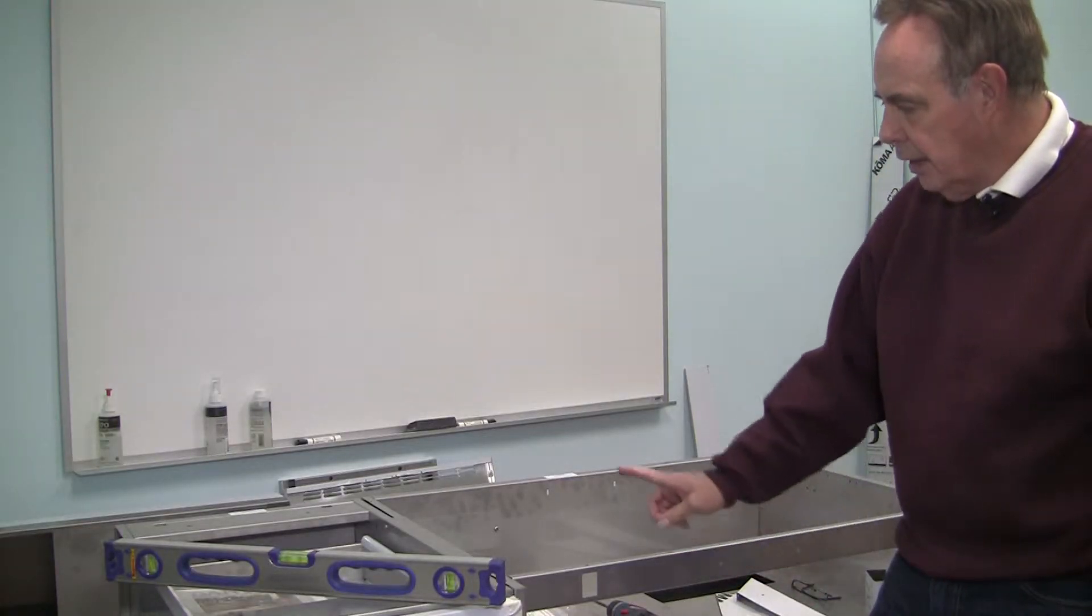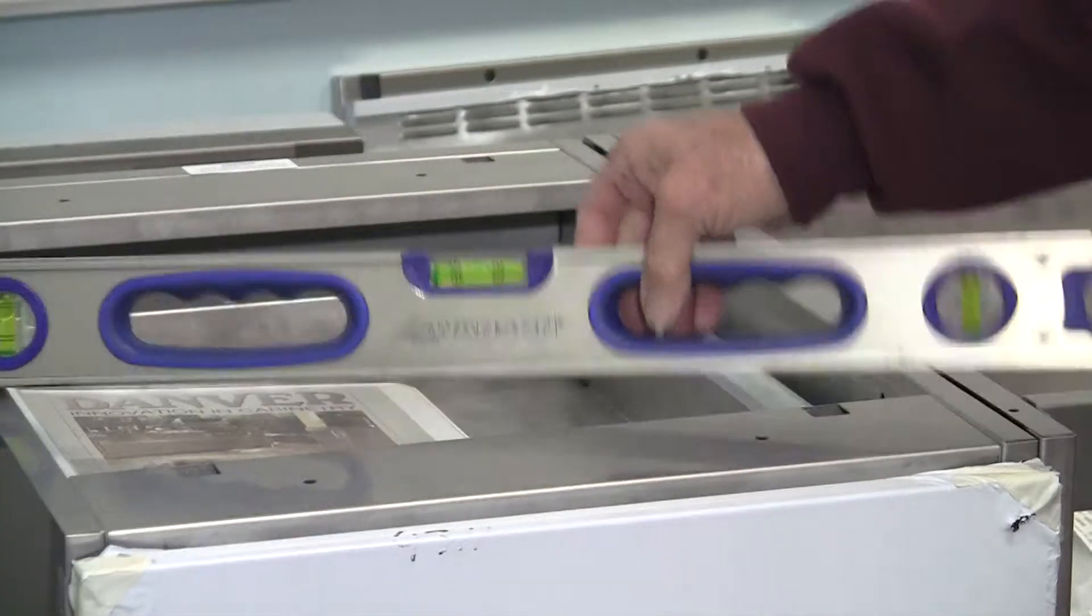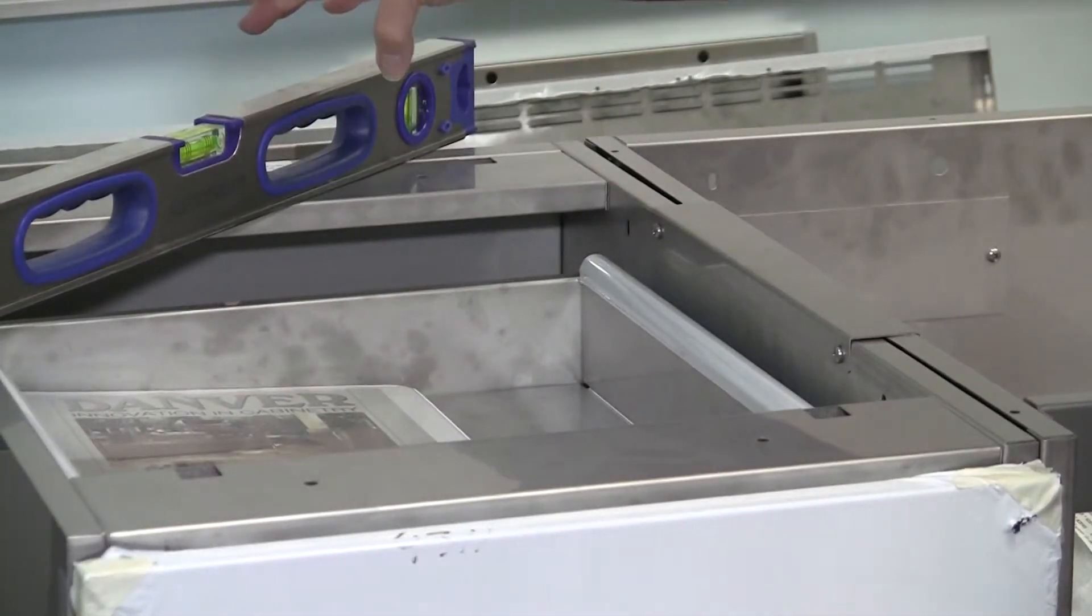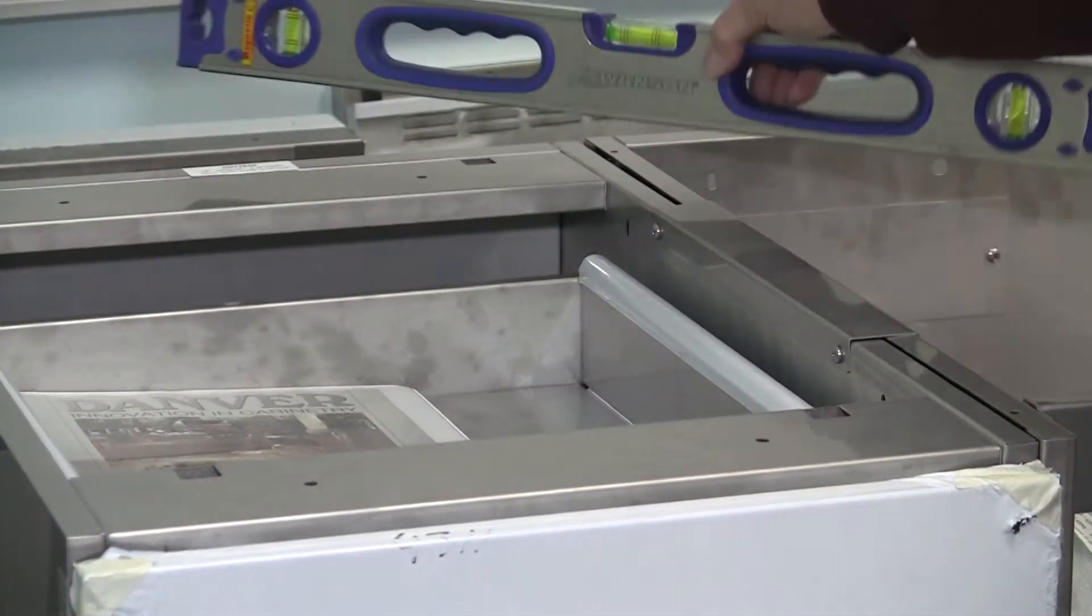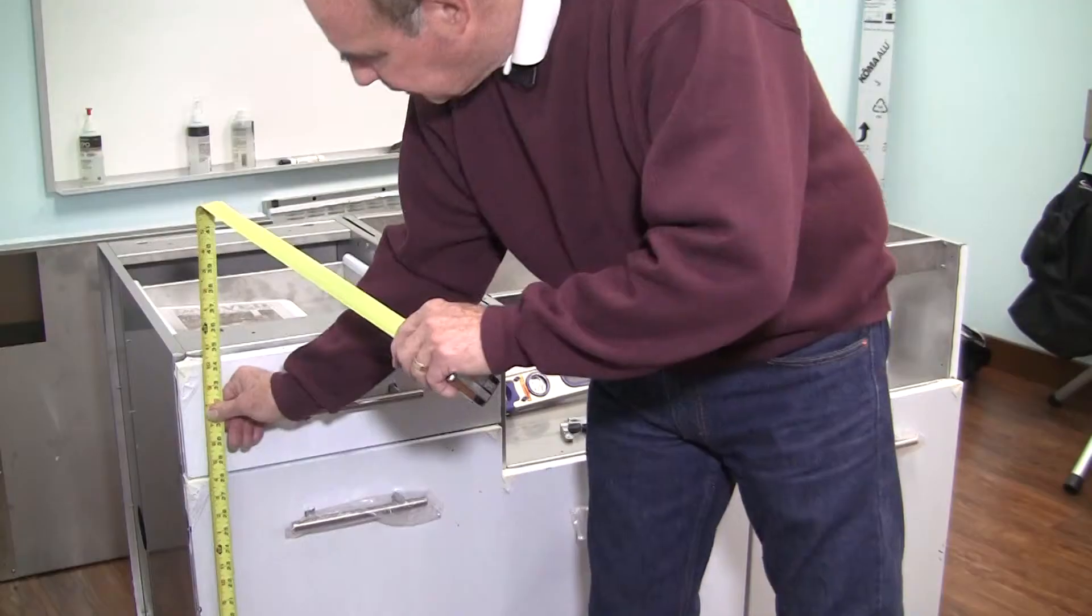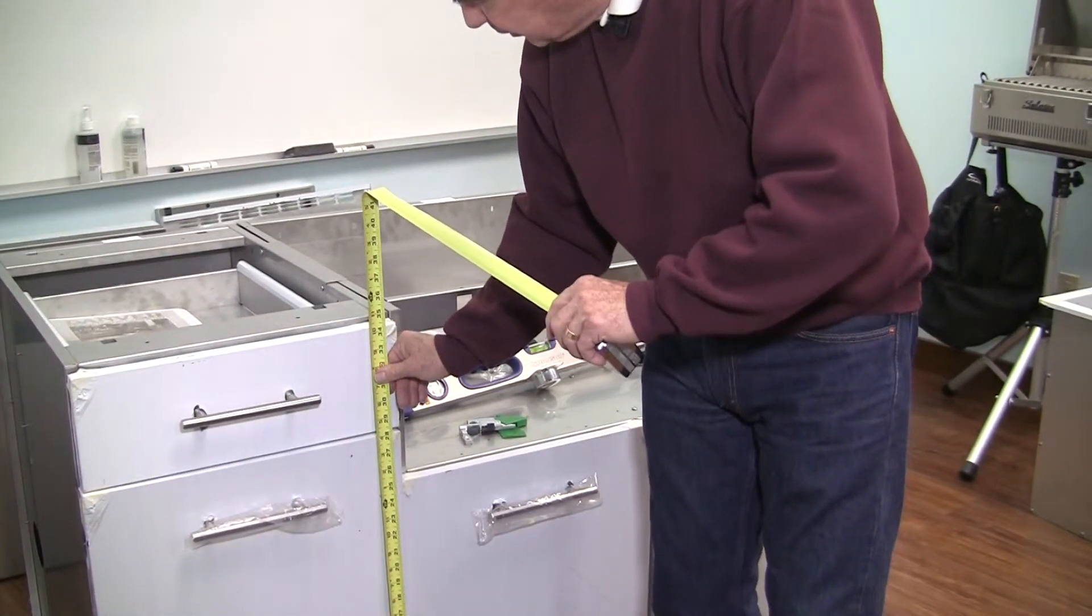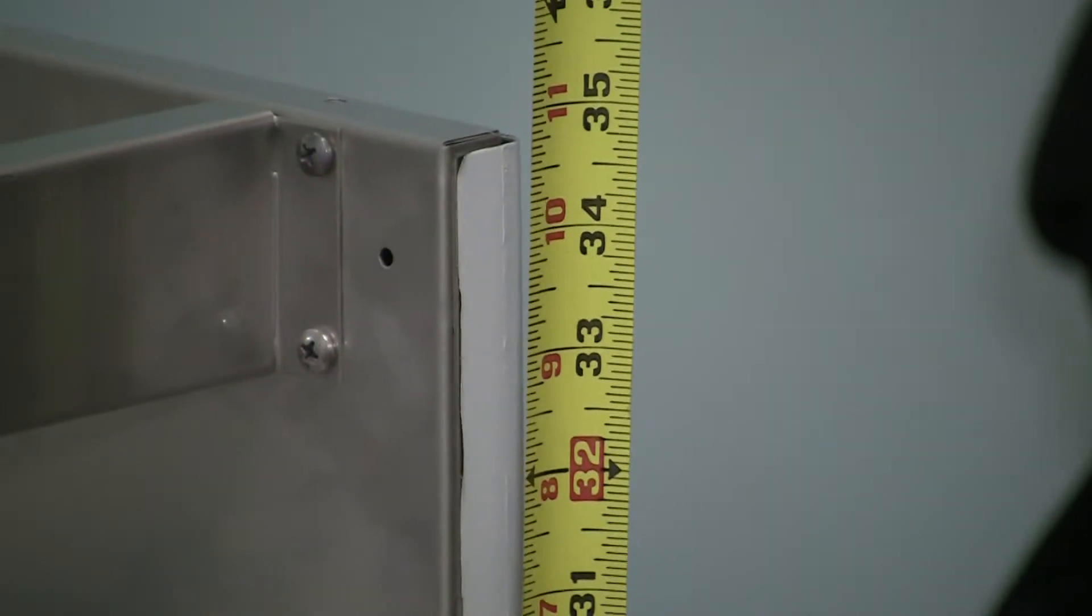At this juncture, take your level, bring it out and check around to see how level you are and if the legs need to be adjusted so that your overall height is 34 and a half inches, which is standard under counter height.